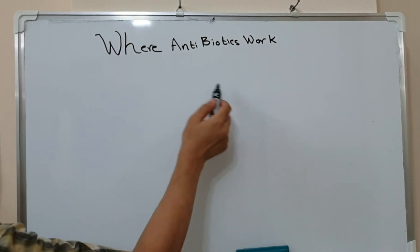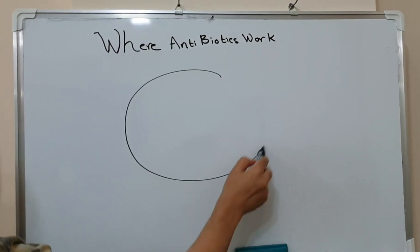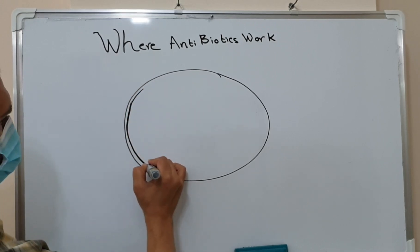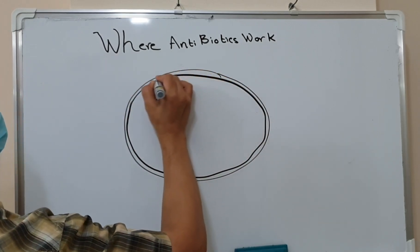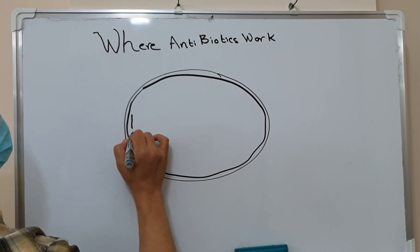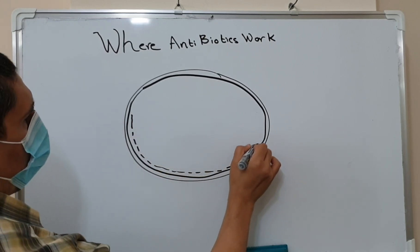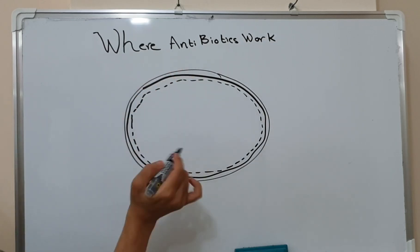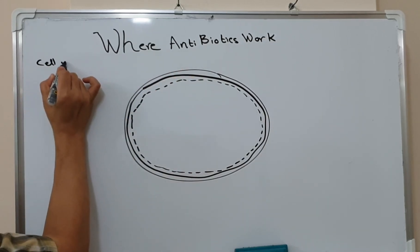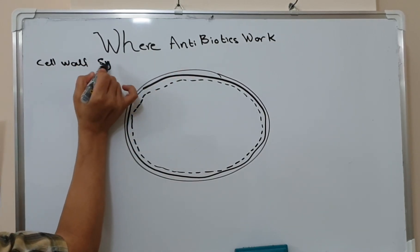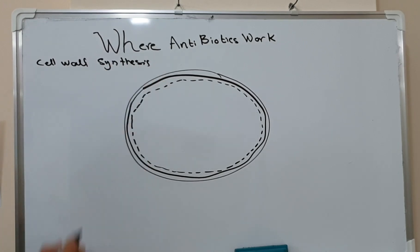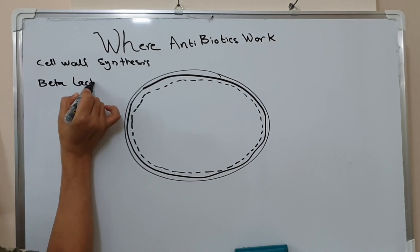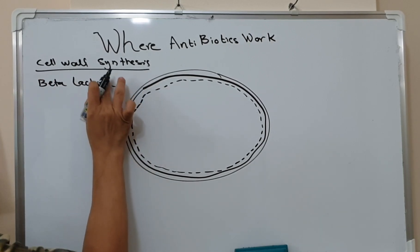Hello everyone, good evening. In this lecture we will show you where the antibiotics work. We will start to draw this bacteria — the cell wall, the cell membrane, and also some enzymes of the cell, such as beta-lactamases and other enzymes. The first group works on the cell wall synthesis of the bacteria.